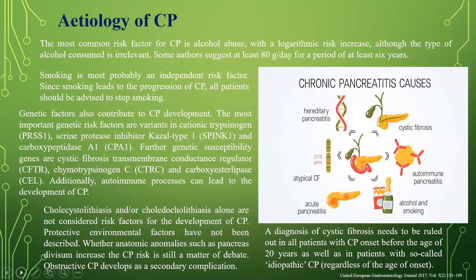The most common risk factor for chronic pancreatitis is alcohol abuse, with a logarithmic risk increase; the type of alcohol consumed is irrelevant. Some authors suggest at least 80 grams per day for at least six years. Smoking is most likely an independent risk factor, and since it leads to progression, all patients should be advised to stop. Genetic risk factors include variants in cationic trypsinogen, serine protease inhibitor Kazal type 1, and carboxypeptidase A1. Further susceptibility genes include cystic fibrosis transmembrane conductance regulator, carboxyl ester lipase, etc. Additionally, autoimmune processes can also lead to chronic pancreatitis development.